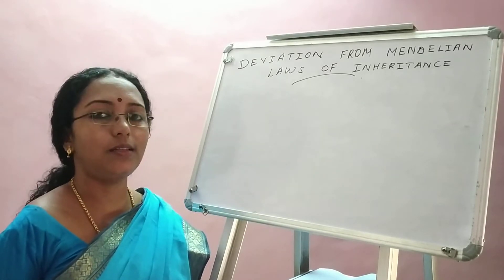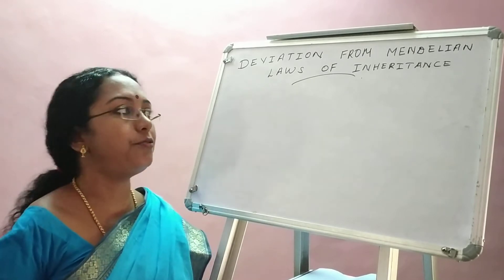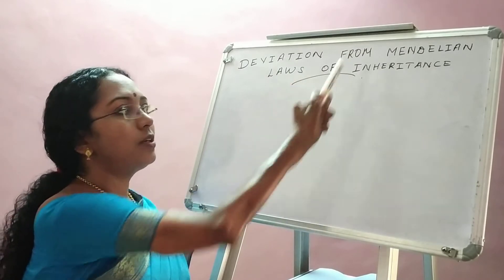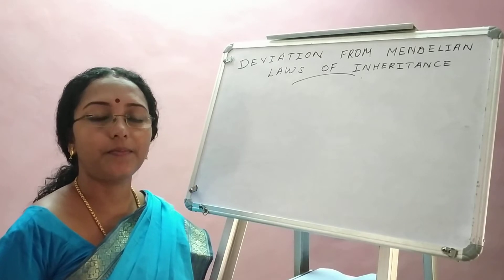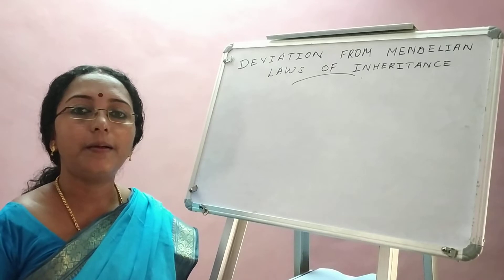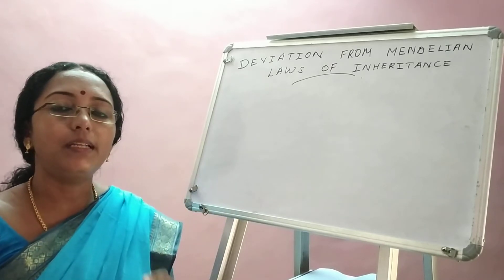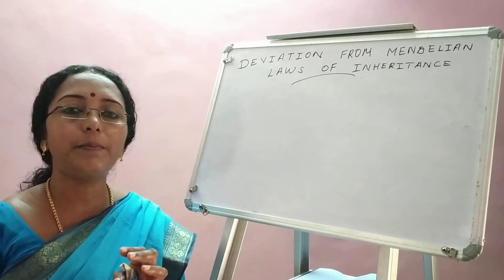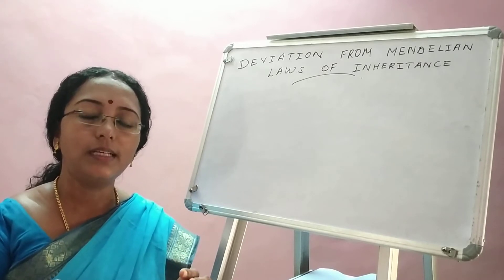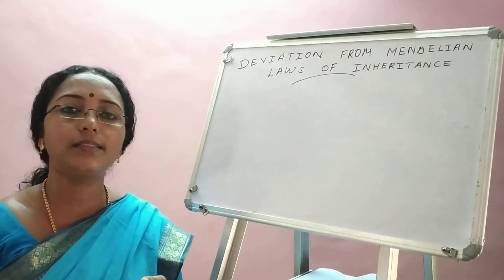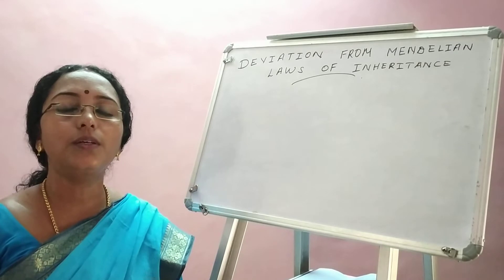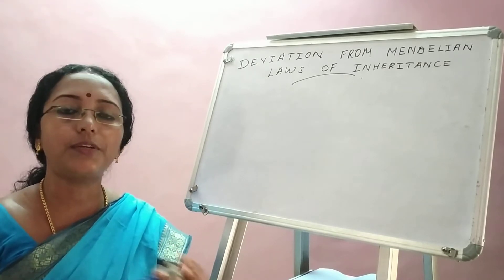In today's video, let us see certain concepts that deviate from the laws of inheritance framed by Gregor Mendel. This concept came into the frame when Mendel's experiments were carried out in different plants — that is, the same steps were followed but the pea plant was replaced by some other plant. Some plants showed the same pattern of Mendelian inheritance, but some deviated from the principles framed by Mendel.